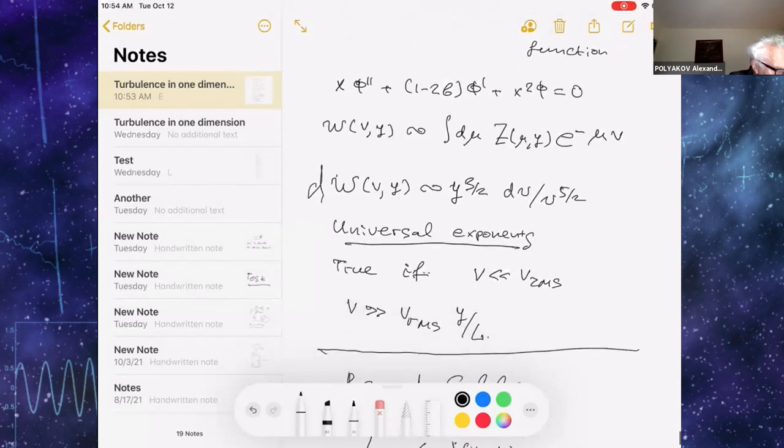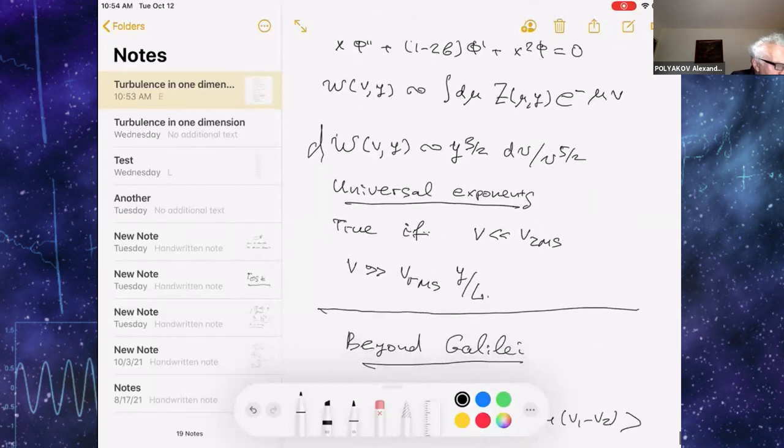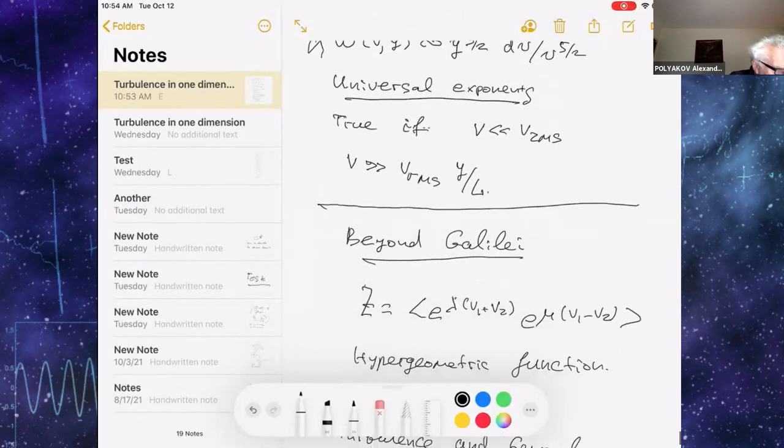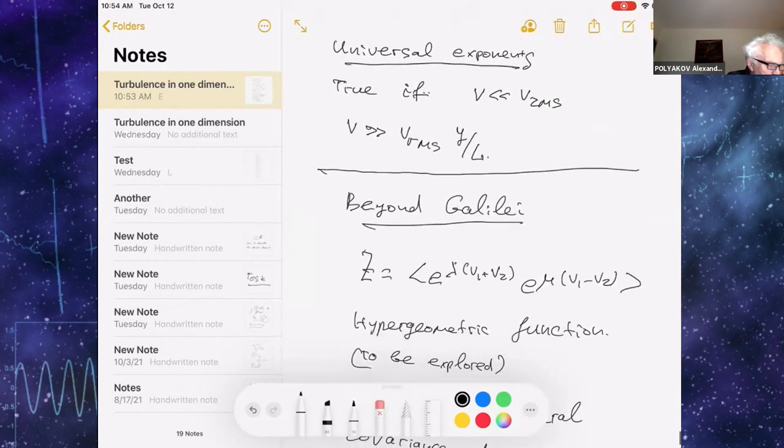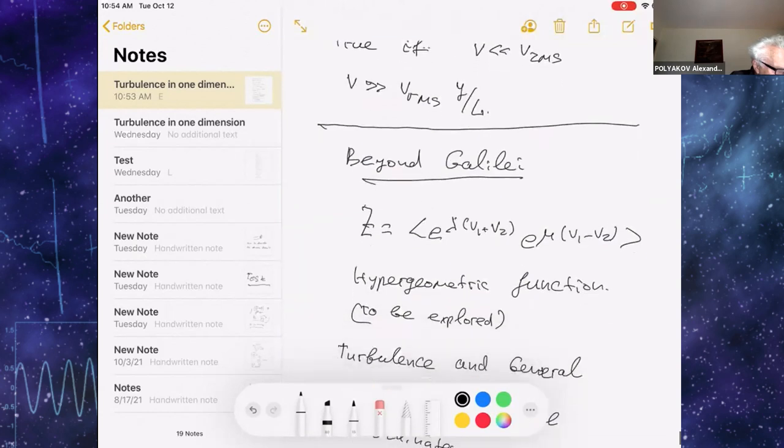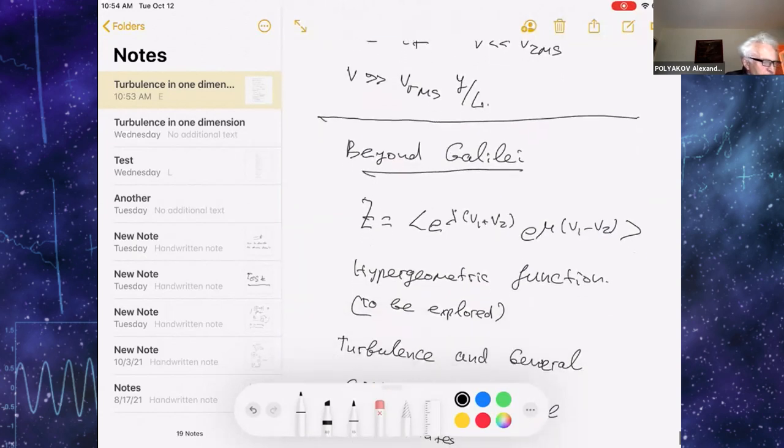So, there is still some unsolved problems here. And there is another solution which can be found for the master equation, which contains not the Bessel function, but hypergeometric function, and it relates to non-Galilean invariant.